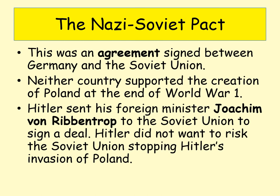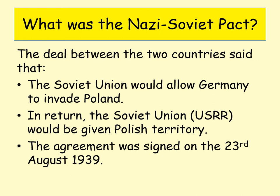The Nazi-Soviet Pact is an agreement — a pact means an agreement. It is sometimes known as the Molotov-Ribbentrop Pact. Molotov was one of the leading politicians in the Soviet Union, and Ribbentrop was the foreign minister of Germany at the time — two senior politicians who negotiated the deal. The agreement stated that the Soviet Union would allow Germany to invade Poland, and in return the Soviet Union would be given Polish territory, dividing Poland in two. The agreement was signed on the 23rd of August 1939, just over a week before the invasion of Poland.